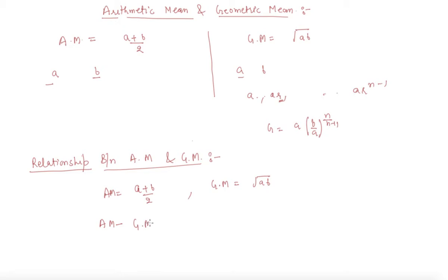Let me write AM minus GM equals (A+B)/2 minus root AB. Taking the LCM, what we will get is A plus B minus 2 times root of AB. This is the square of (root A minus root B)² upon 2.